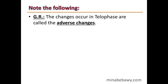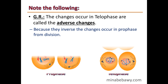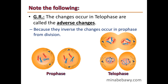Give reason: The changes occurring in telophase are called the adverse changes. This is because they are the inverse of the changes that occur in prophase. In prophase, the nuclear membrane disappeared and spindle fibers appeared; in telophase, the spindle fibers disappear and the nuclear membrane reforms.